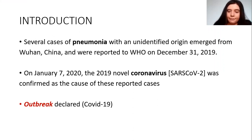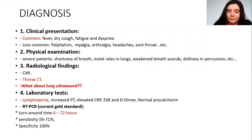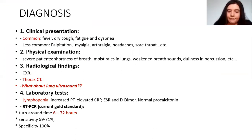This is a global distribution of the disease, which is a multisystemic disease. It can affect the heart, the lungs, and other organs. To diagnose this disease, the most common clinical signs are fever, dry cough, fatigue, and dyspnea. Less common signs include myalgia, ageusia, headache, and sore throat.